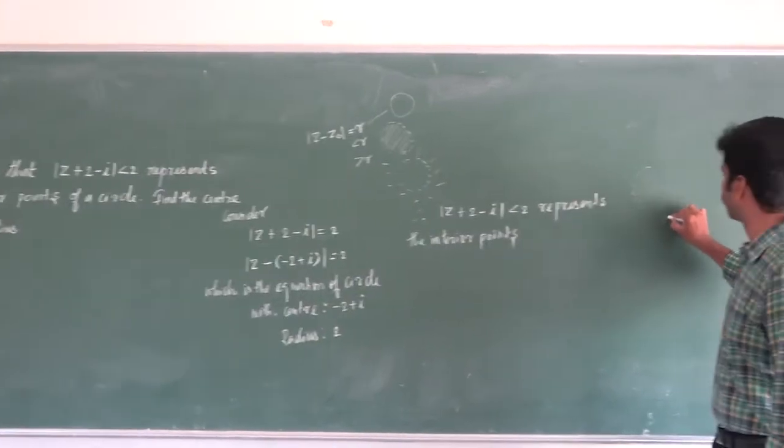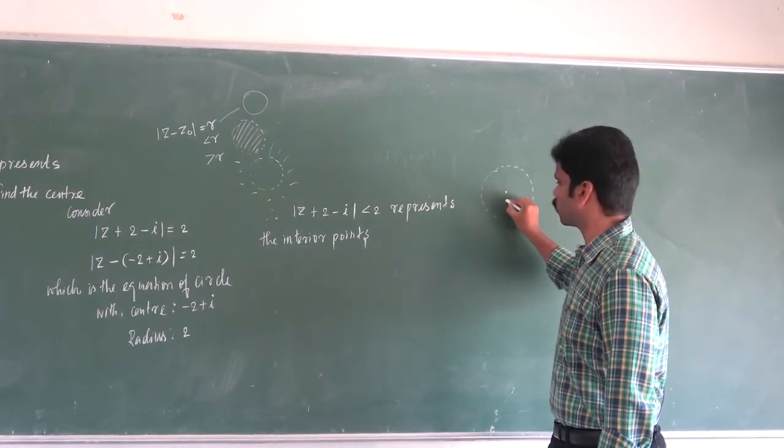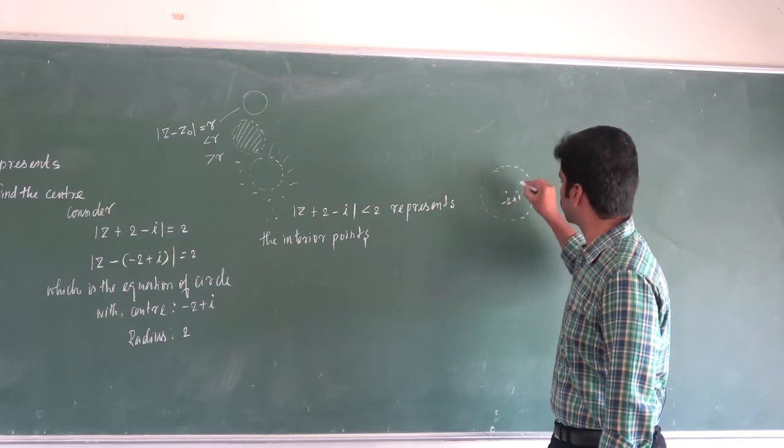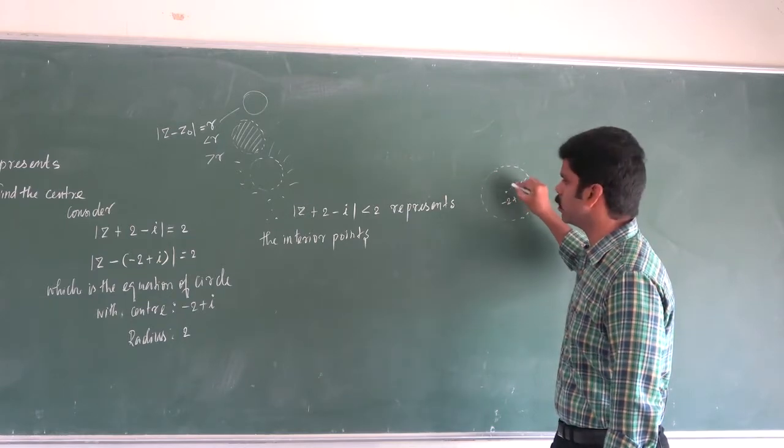Let me draw a rough diagram. You know, center is minus 2 plus i. You know, radius is 2.